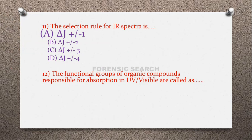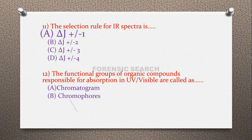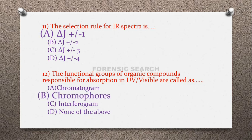Question 12: The functional groups of organic compounds responsible for absorption in UV and visible spectroscopy are called — the correct answer is option B — chromophores are the functional groups of organic compounds which are responsible for absorption in UV and visible spectroscopy.